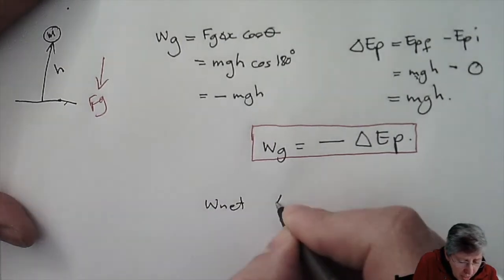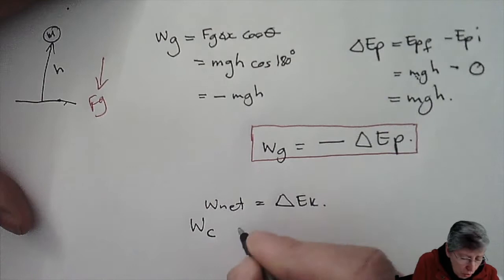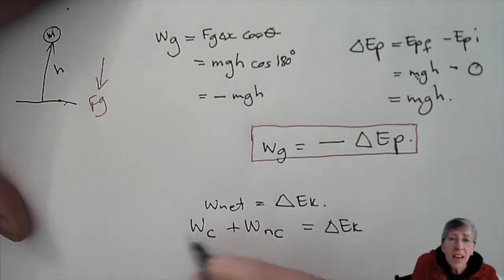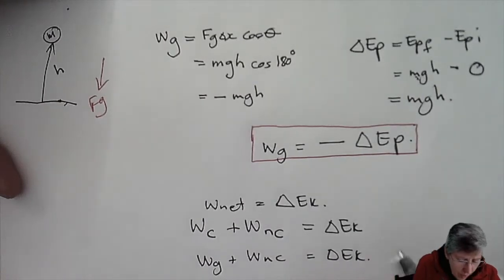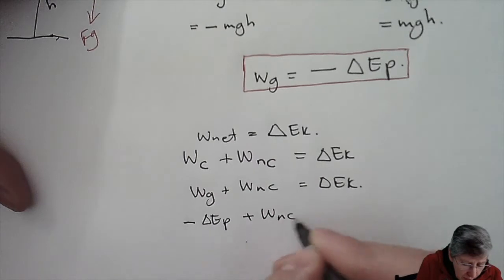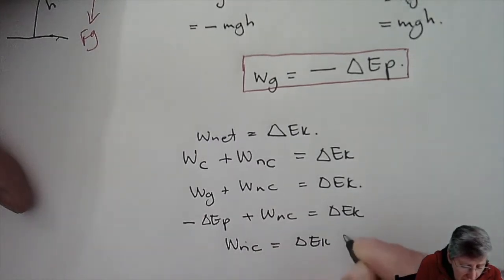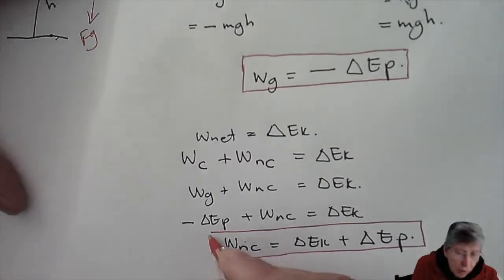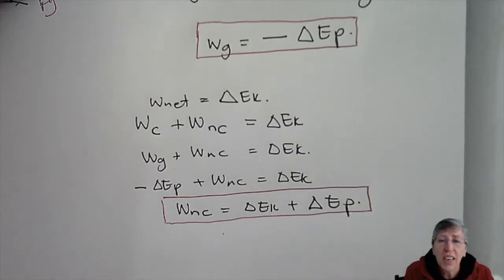We want to say: W_net = ΔEK (change in kinetic energy). The net work is the work done by the conservative force (gravity) plus the work done by all non-conservative forces. Since W_gravity = −ΔEP, substituting and rearranging gives: work done by the non-conservative forces = ΔEK + ΔEP. This is on your information sheet and you can use it.